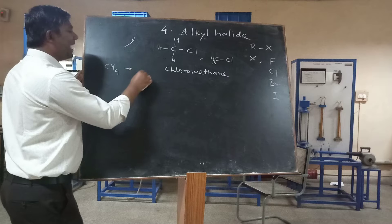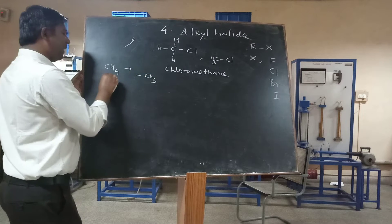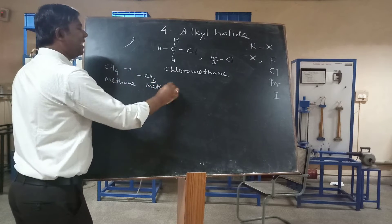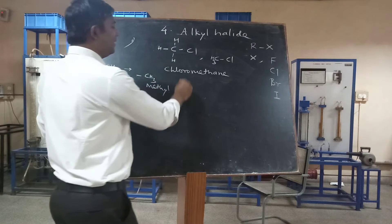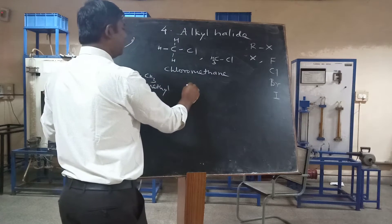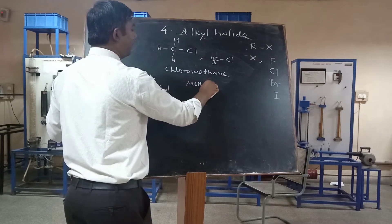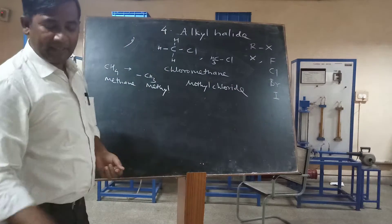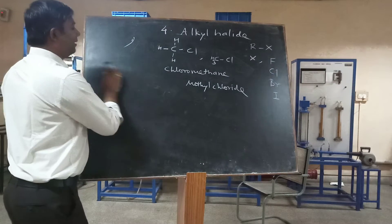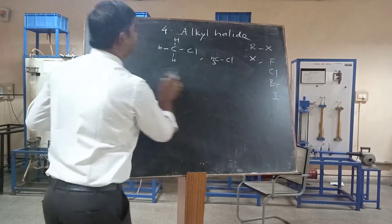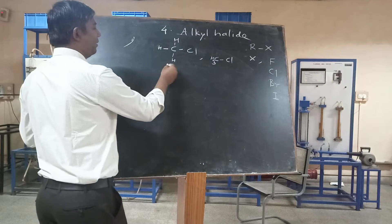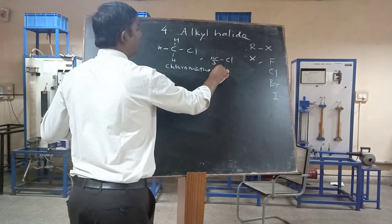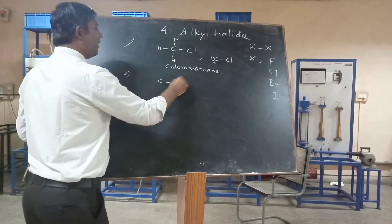So methane (CH4) turns into CH3Cl. That is why chloromethane is also commonly known as methyl chloride.